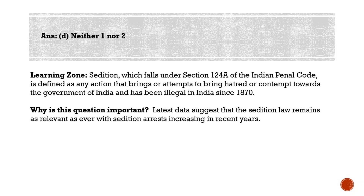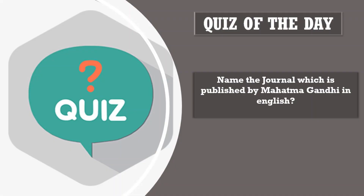Even Mahatma Gandhi was later tried for sedition for his articles in a journal. That brings us to our quiz question for the day: name the journal published by Mahatma Gandhi in English for which he was tried for sedition by the British. Please post your answers in the comment section.